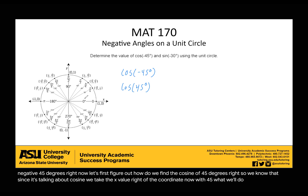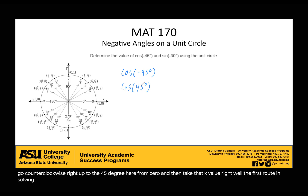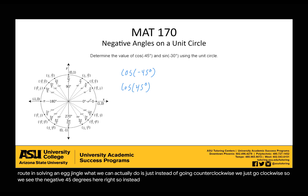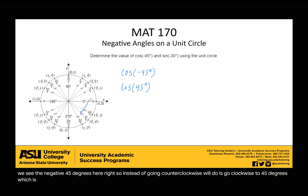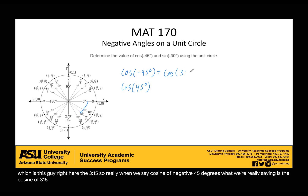With 45 degrees, what we normally do is go counterclockwise up to the 45-degree mark from zero and then take that x-value. Well, the first route in solving a negative angle is that instead of going counterclockwise, we just go clockwise. So we see negative 45 degrees, and instead of going counterclockwise, we go clockwise 45 degrees, which lands us at 315. So really, cosine of negative 45 degrees is the cosine of 315 degrees. Looking at it, we see the x-value here is square root of 2 over 2, and it's positive. So that's our first answer.